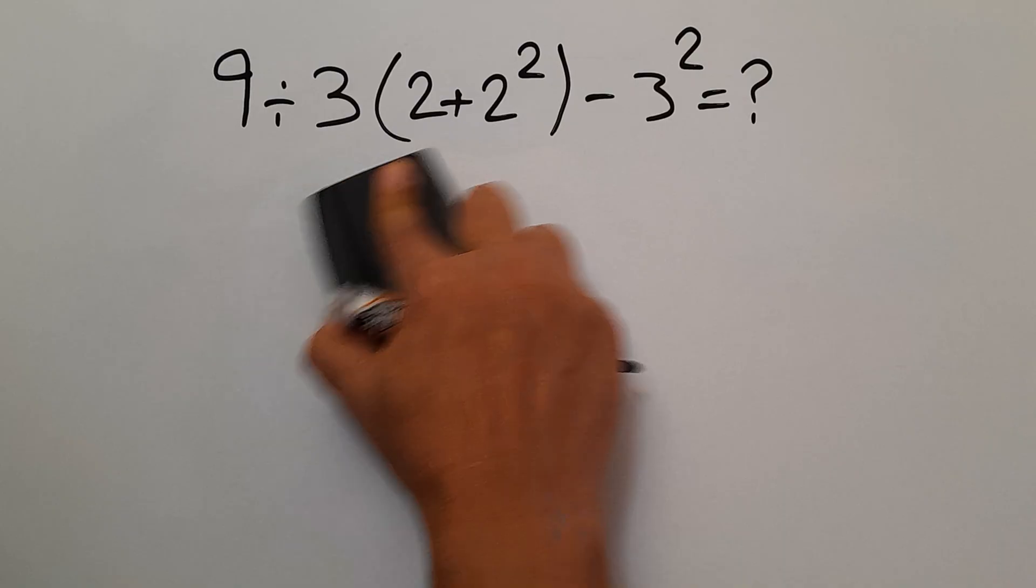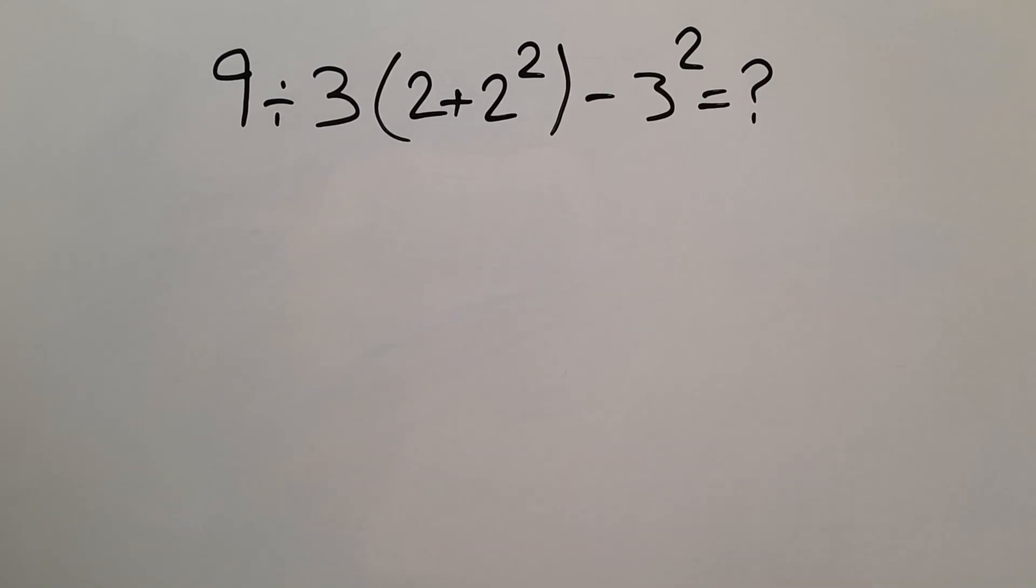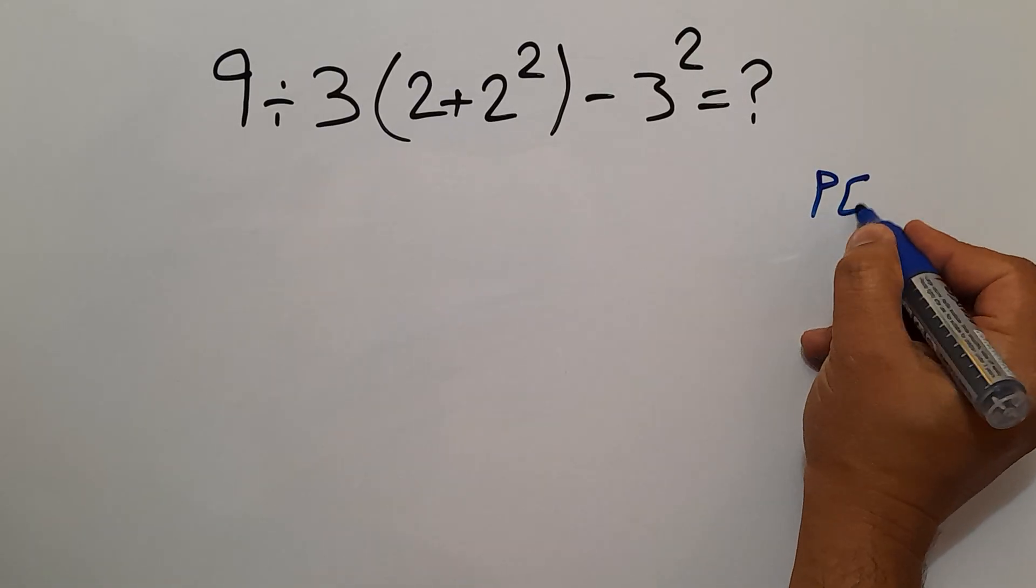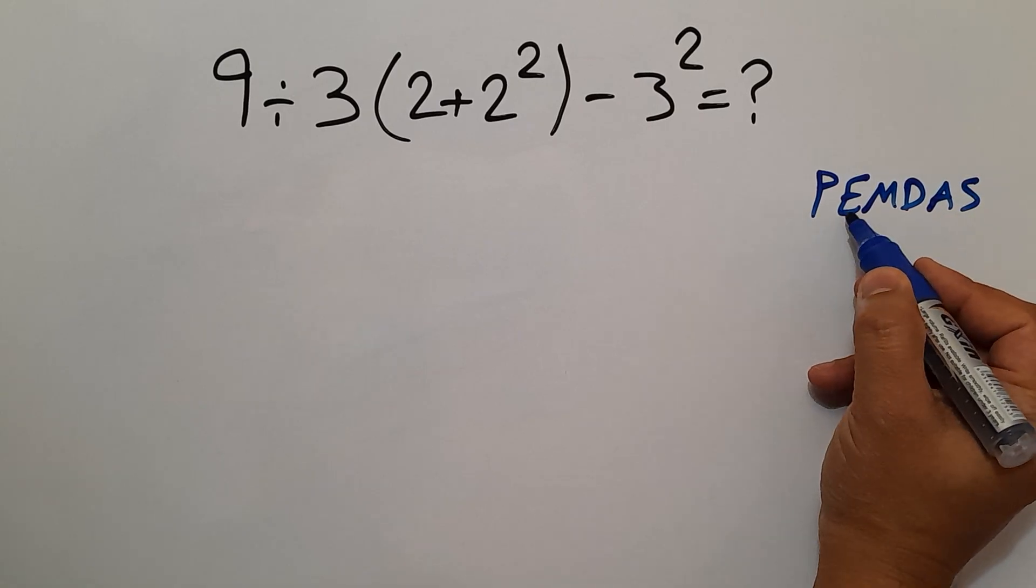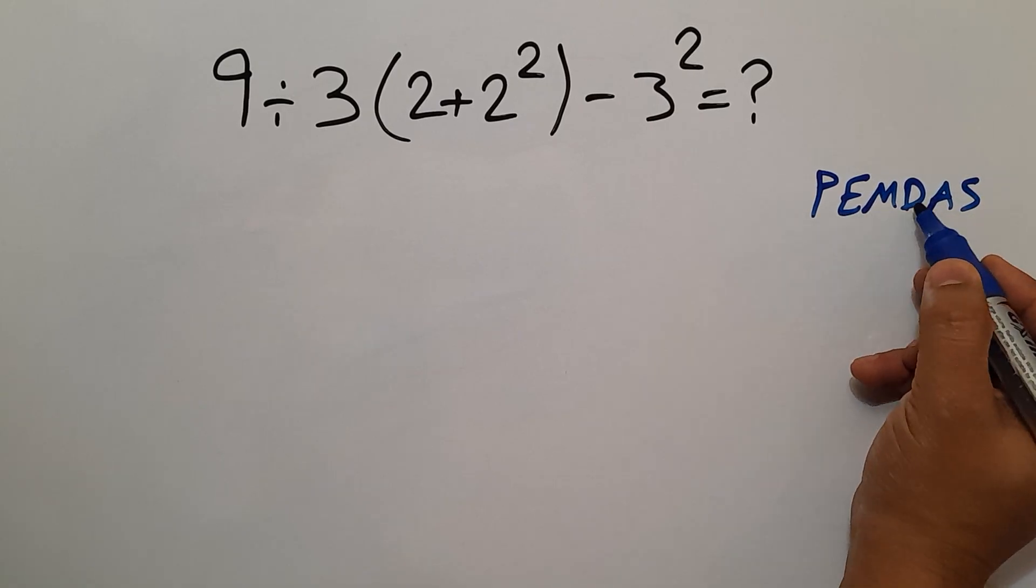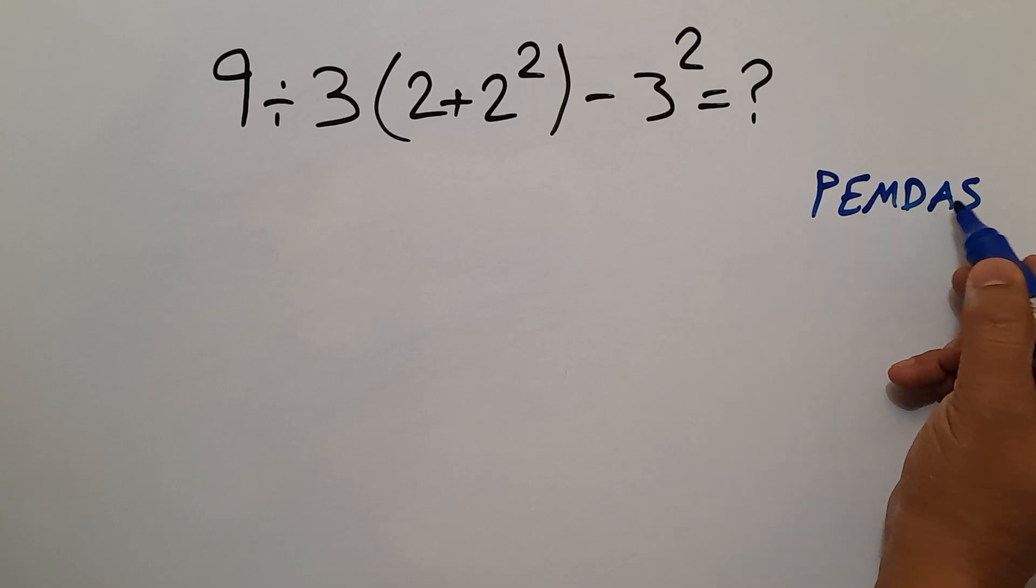Because according to the order of operations which is PEMDAS. P stands for parentheses, E stands for exponents, M and D stands for multiplication and division, and A and S stands for addition and subtraction.